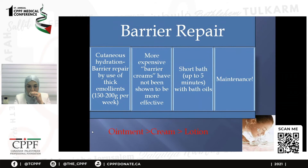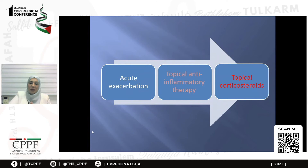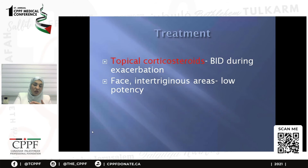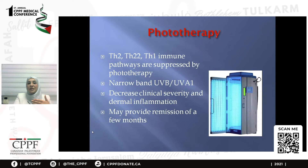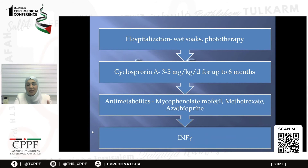In acute exacerbation, topical anti-inflammatory therapies such as topical corticosteroids are given; low-potency corticosteroids such as hydrocortisone are used on the face and flexural areas. Topical calcineurin inhibitors such as tacrolimus (Protopic) can be used for maintenance and in areas where long-term topical corticosteroids cannot be used. Phototherapy with narrowband UVB is available in Ramallah, Palestine, and decreases severity with periods of remission. Severe cases may require hospitalization for wet wraps and phototherapy, and cyclosporine can be given for severe cases.